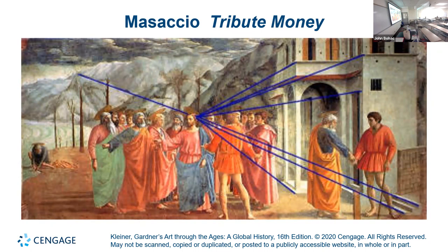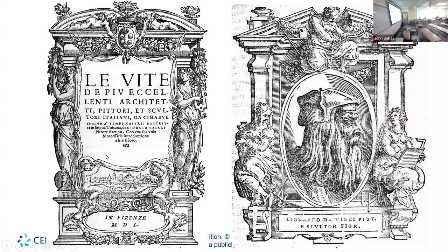This is the Tribute Money by Masaccio, 1425. This is one of the early examples of one-point perspective. The horizon line is right there at Christ's head, and you see all the perspective lines lead right to Christ. It was perspective for the purposes of creating the illusion of space, but there was also a theological component: everything converges on Christ.